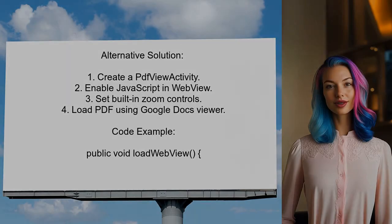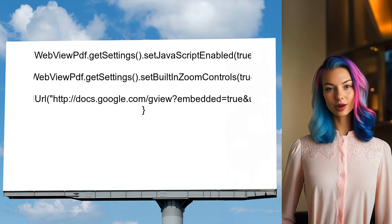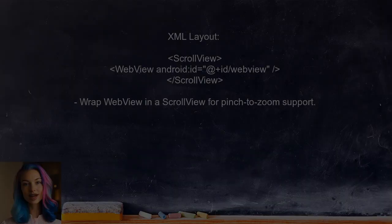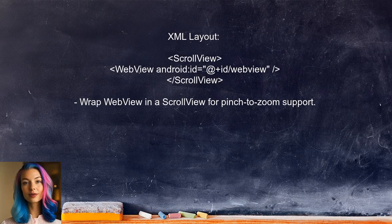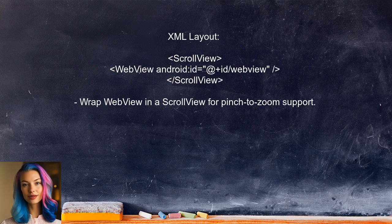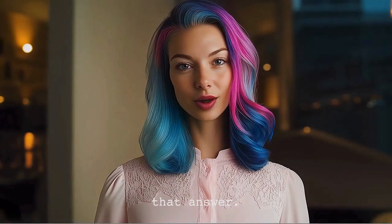An alternative approach shared by another user involves creating a dedicated activity for displaying PDFs in a web view. They set up the web view with JavaScript enabled and configure it to support zoom controls. The user also loads a PDF from a URL using Google Docs Viewer. In their XML layout, the user includes a scroll view to wrap the web view, ensuring that pinch-to-zoom functionality works effectively. This setup allows for a better user experience when viewing PDFs.